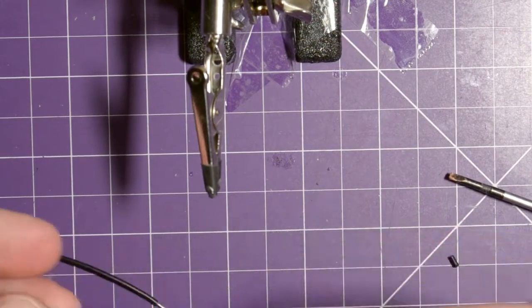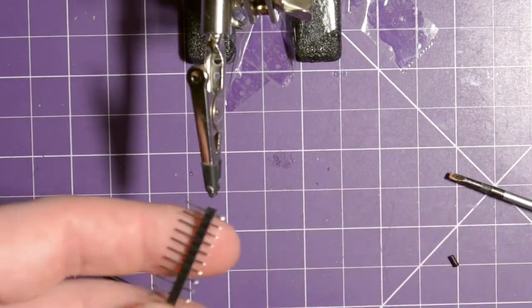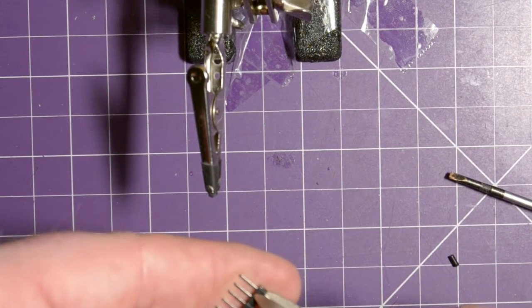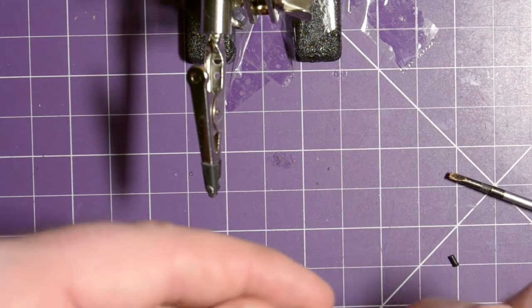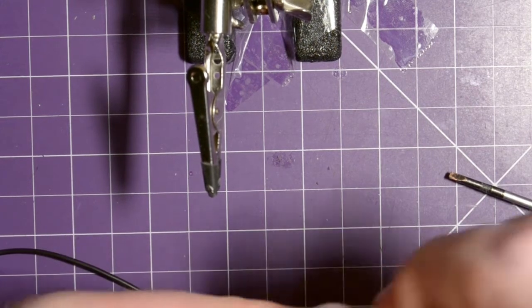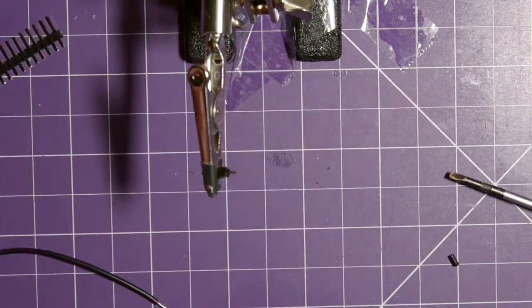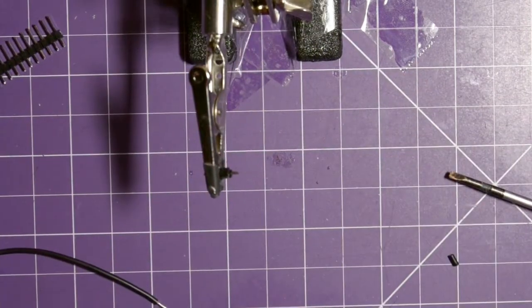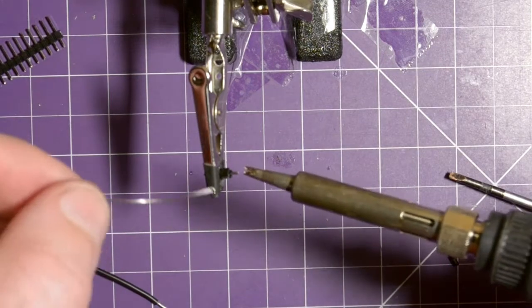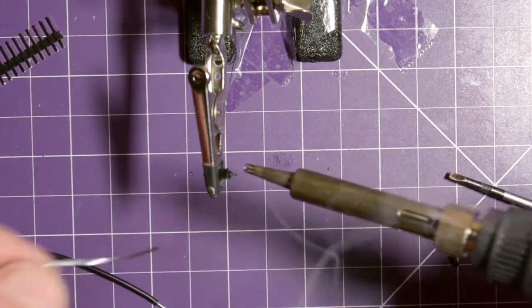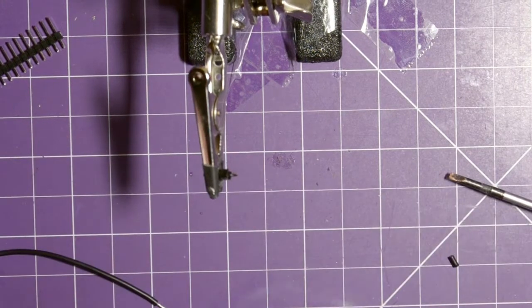Now your pin headers. The pin headers are dirt cheap on eBay, AliExpress, or whatever. Usual suspects. I'm going to cut off just one section of it. We're going to hold it by the long section and pre-tin the short section. Be really quick about this because it is plastic on the other end.